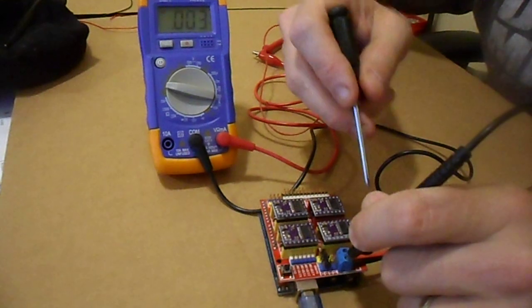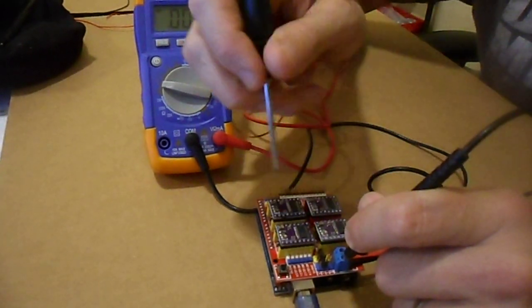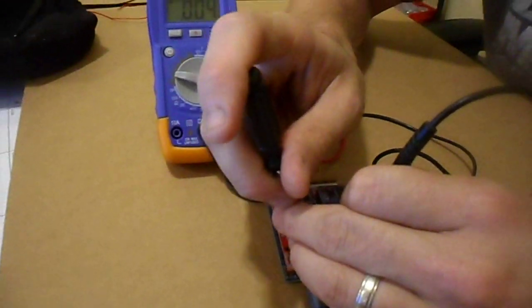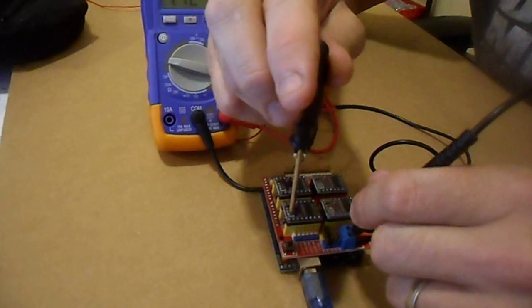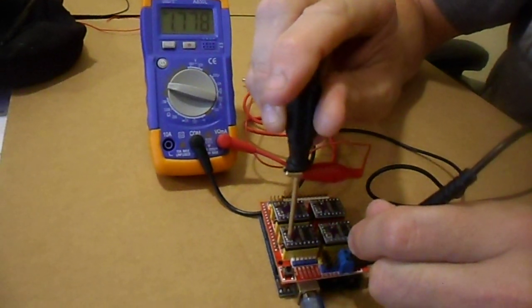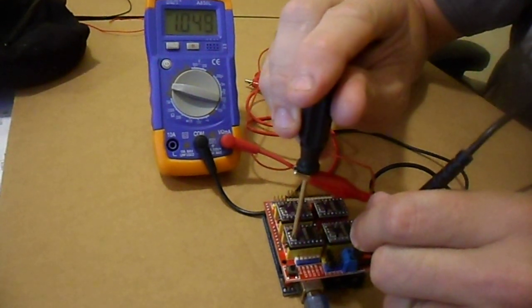So I'm holding my black lead against the negative terminal or the ground terminal of the red board and then I'm just very carefully going to place my screwdriver onto the potentiometer screw and I'm going to turn clockwise to adjust the board.